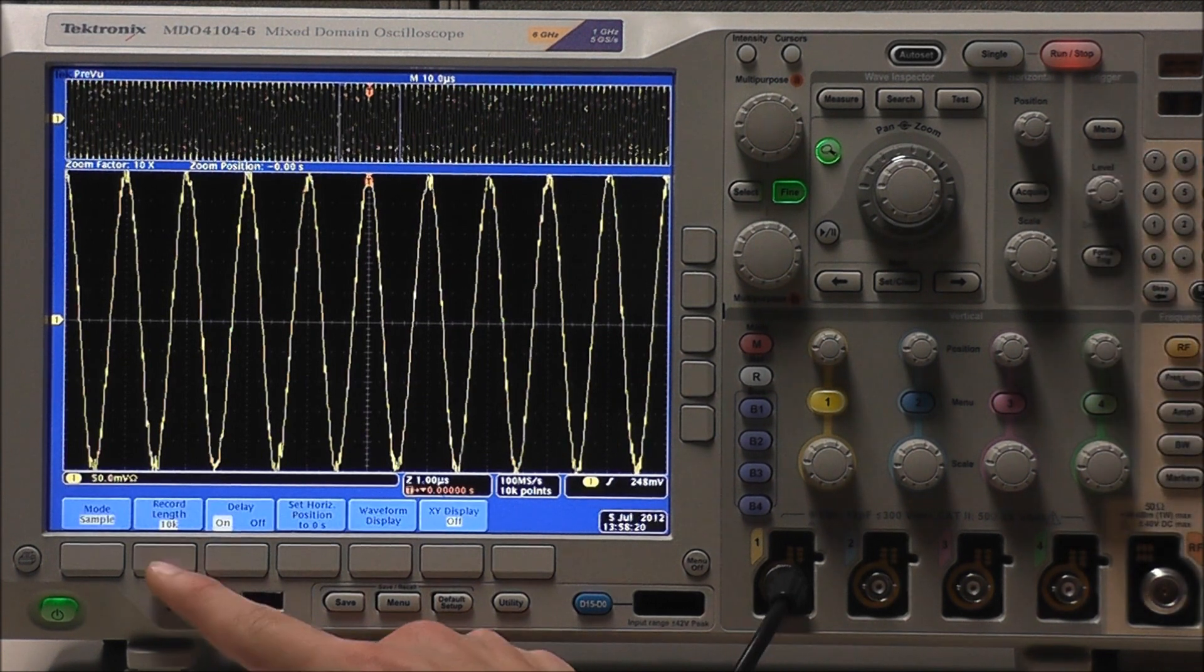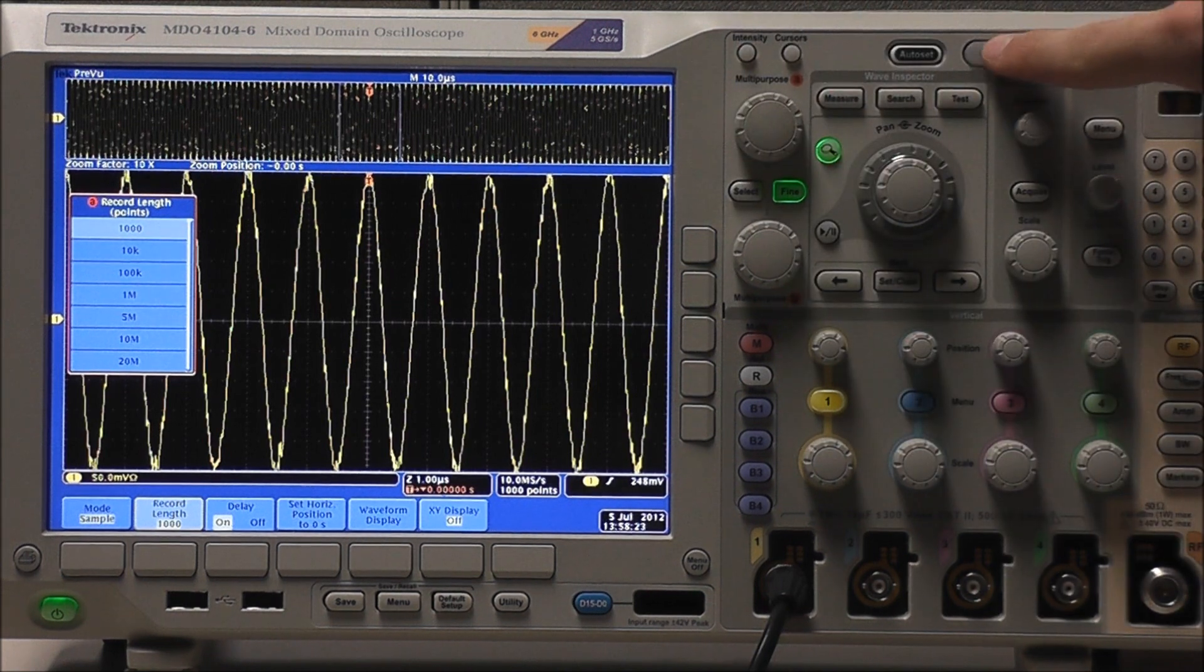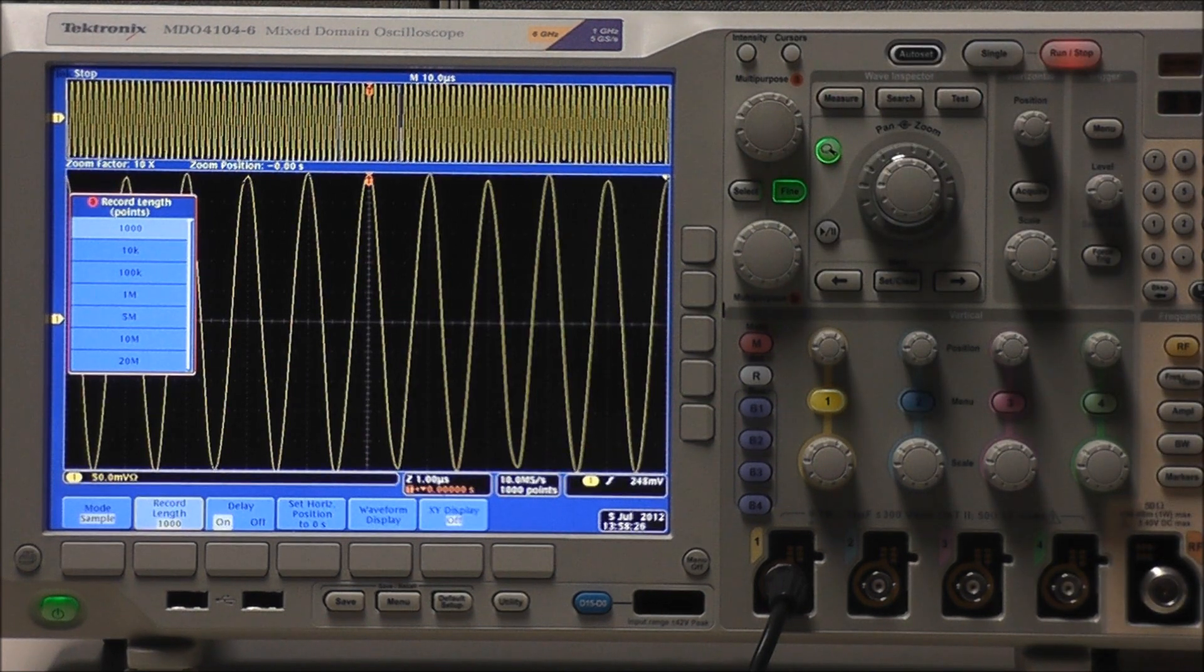Select acquire, record length, and reduce to a thousand in single acquisition. And now we can see how much cleaner and smoother our waveform is.